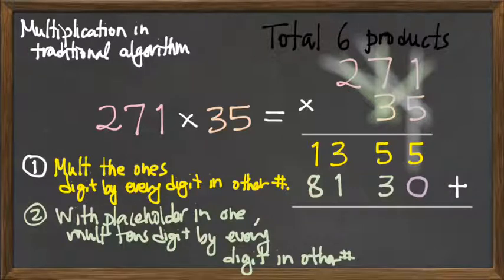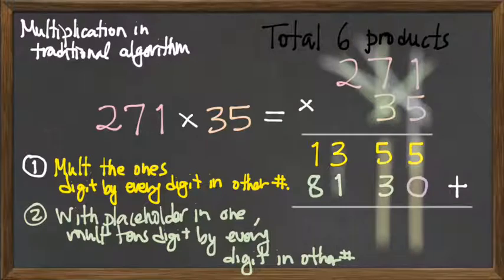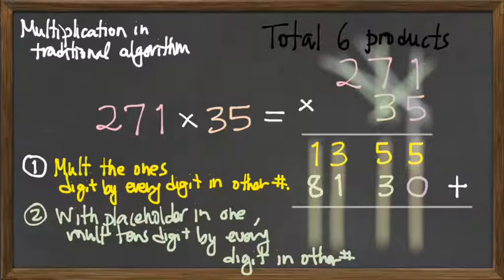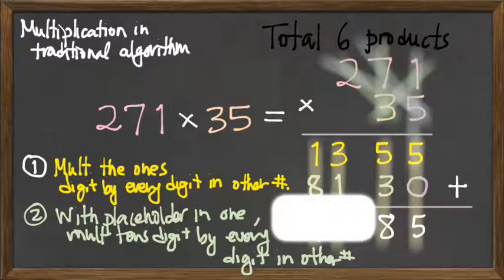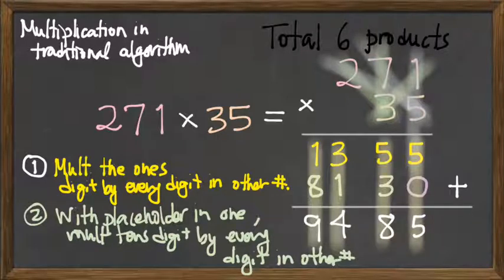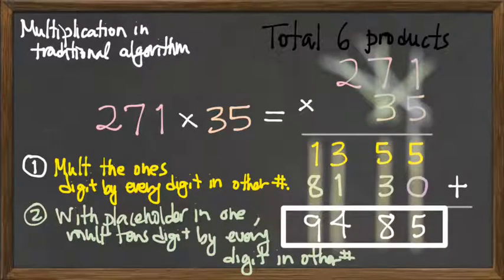And so it's already in a good position for us to just add. And when that addition happens, it goes directly down the columns as addition does. So we plug in what we know about how to add in a traditional algorithm. Five plus zero, five plus three, three plus one, and one plus eight. And that ends up being our answer. That is way too big of a box. There we go. 9,485.